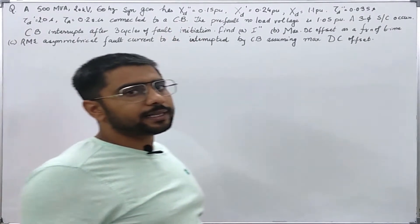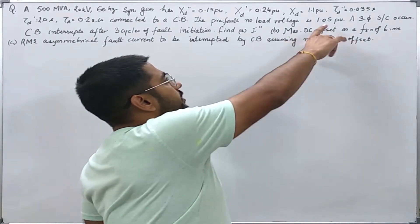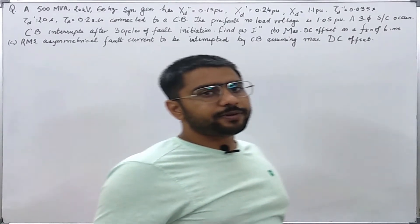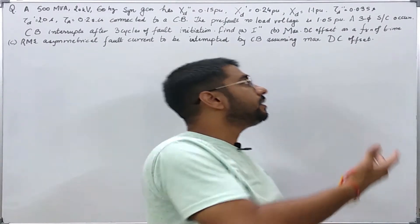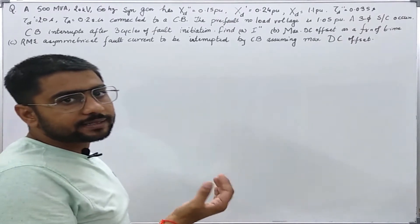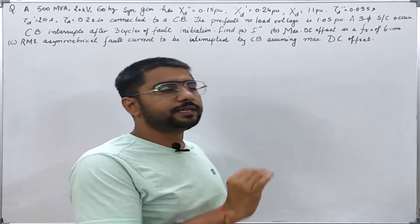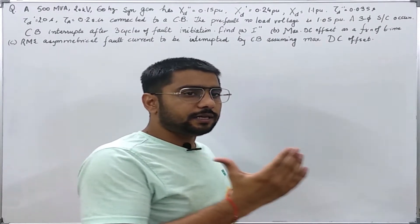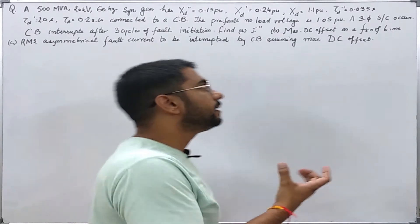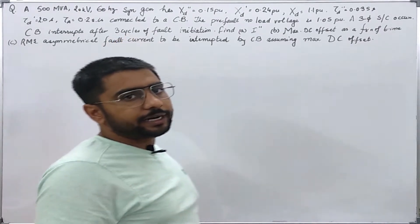It is also told that the generator is at no load and the voltage at no load is 1.05 per unit. Now a three-phase short circuit has occurred at its terminals and it is told that the circuit breaker interrupts the fault after three cycles of the fault initiation. That all will take total time of three cycles before the circuit breaker interrupts the fault.